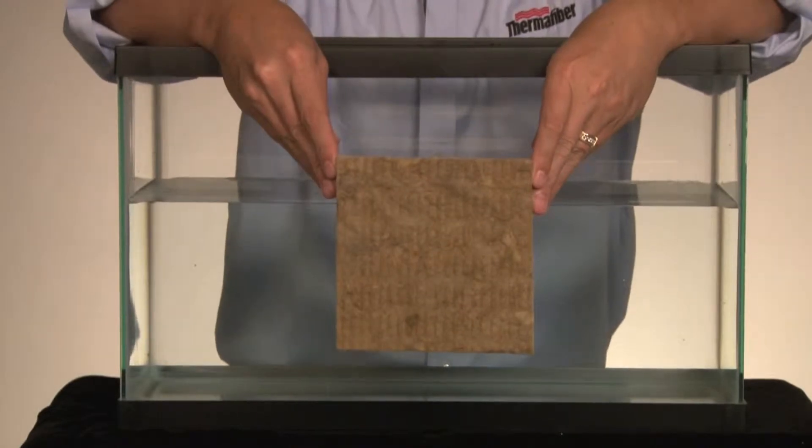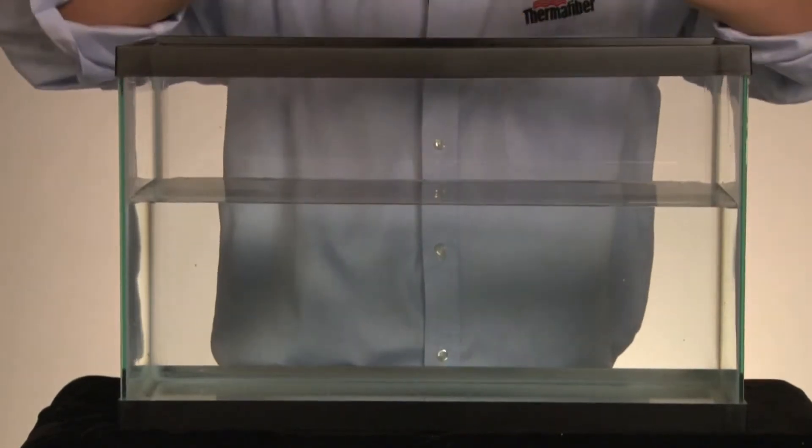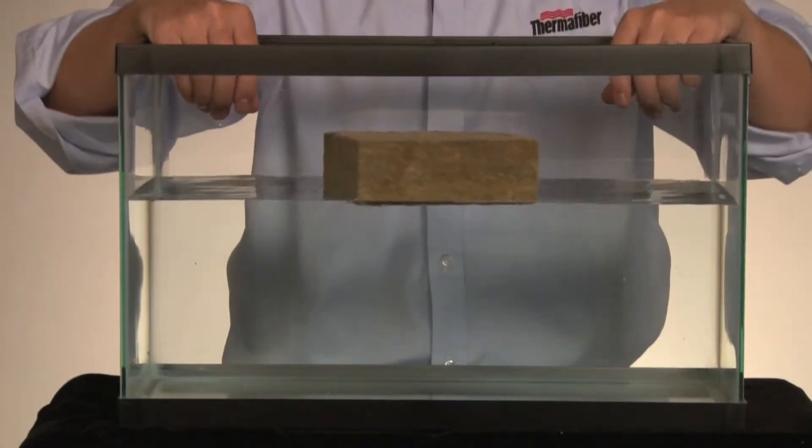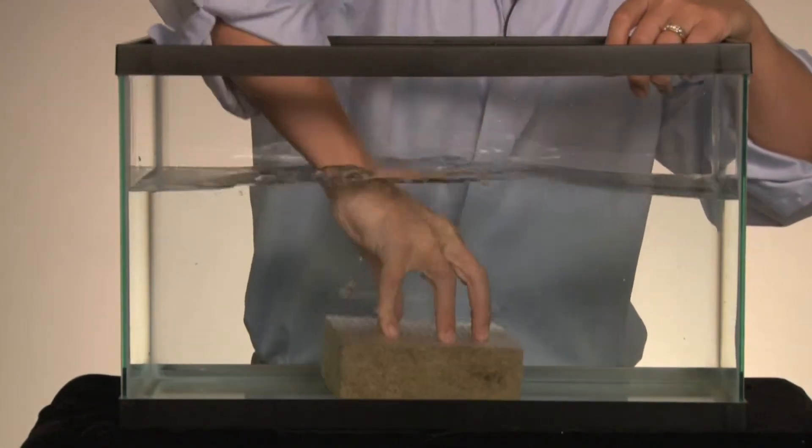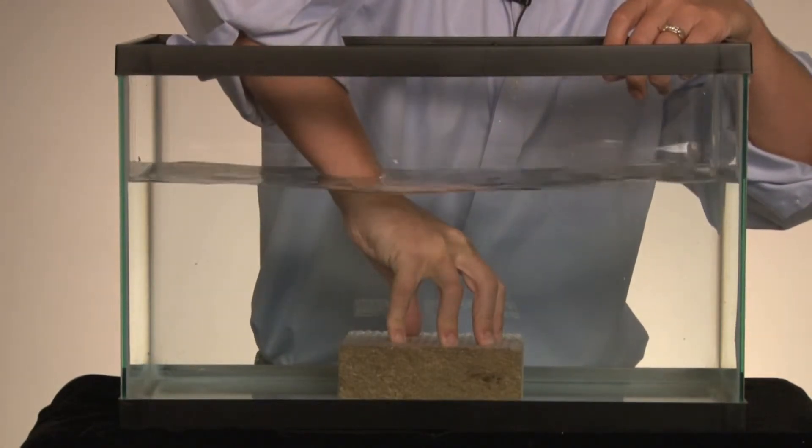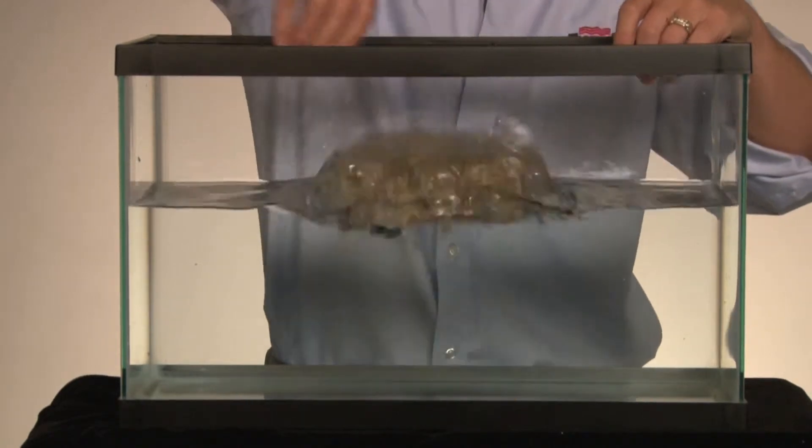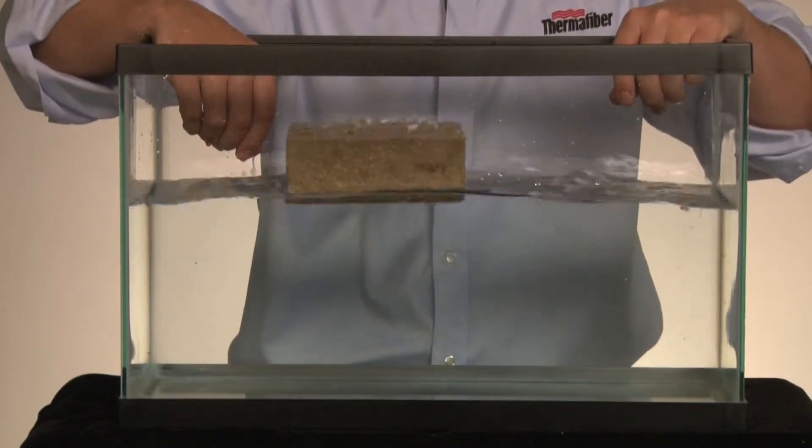Now we are going to fully submerge RainBarrier insulation into a tank of water. The piece of insulation is then held down and released, and the insulation floats immediately up to the water's surface.